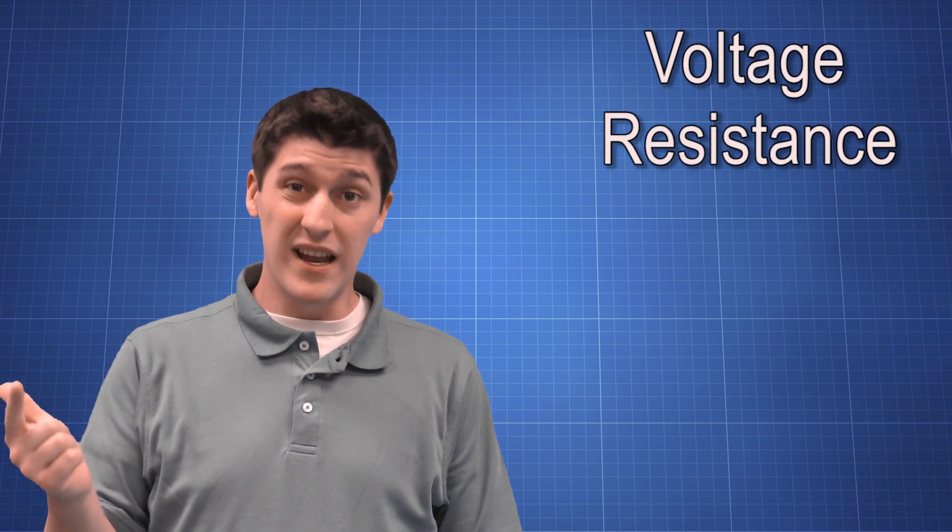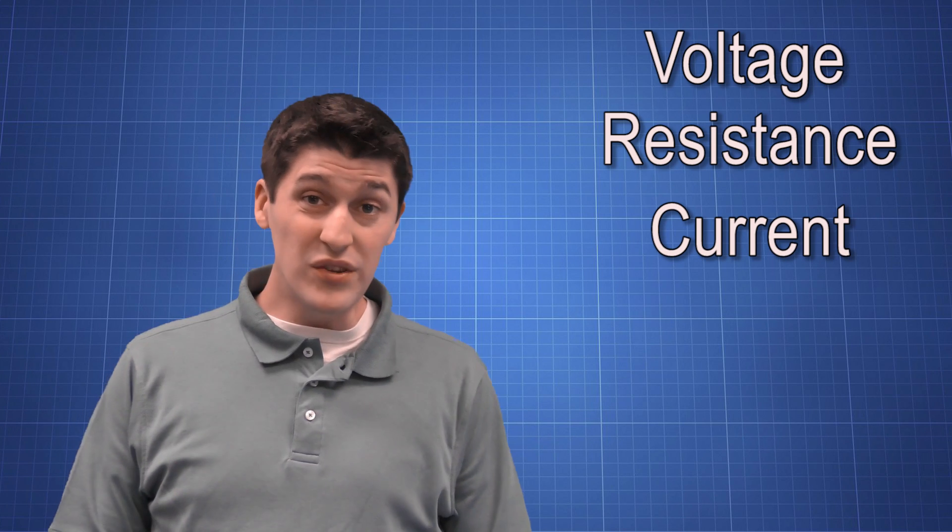When we talk about circuits and electricity, there are three main units that we use: voltage, resistance, and current. Voltage is a little complicated, so we need to use an analogy to help us to understand voltage.